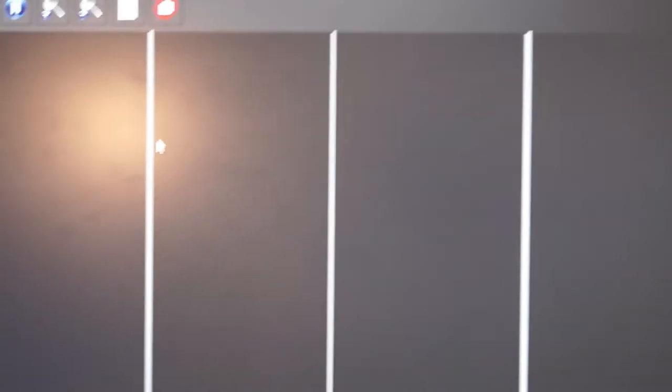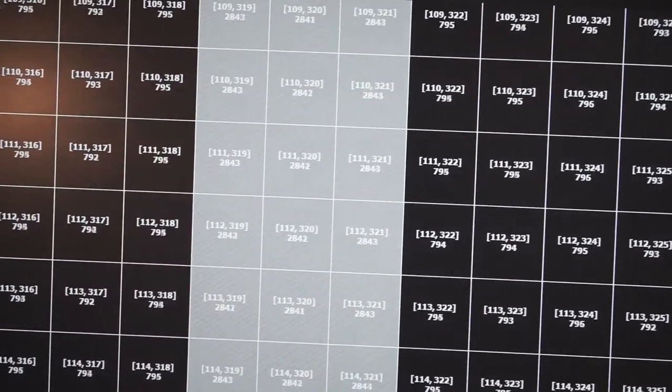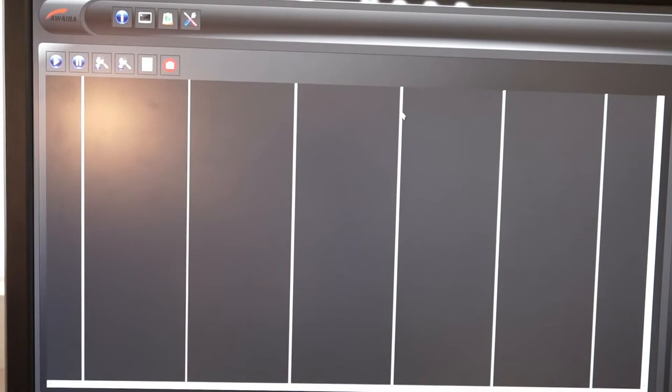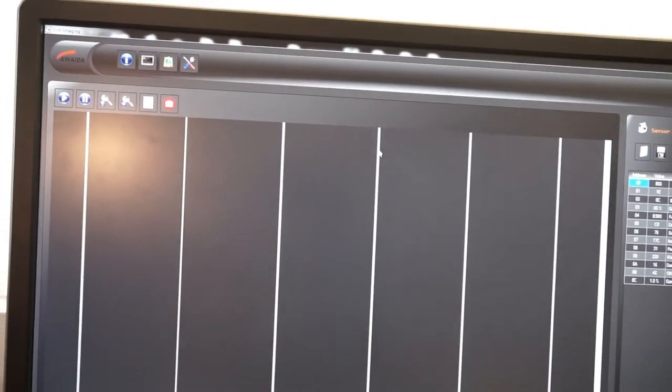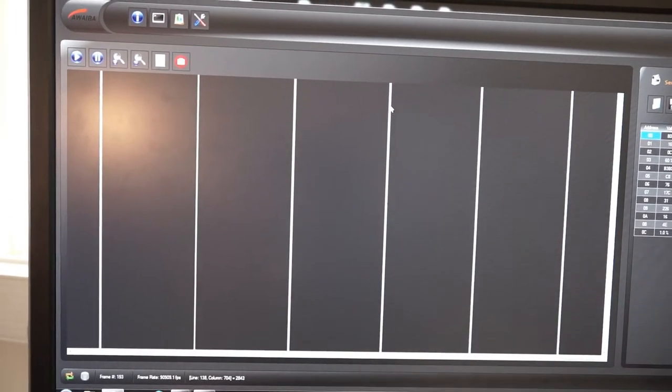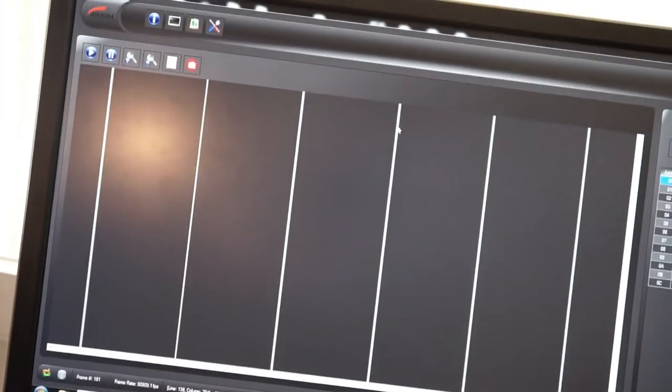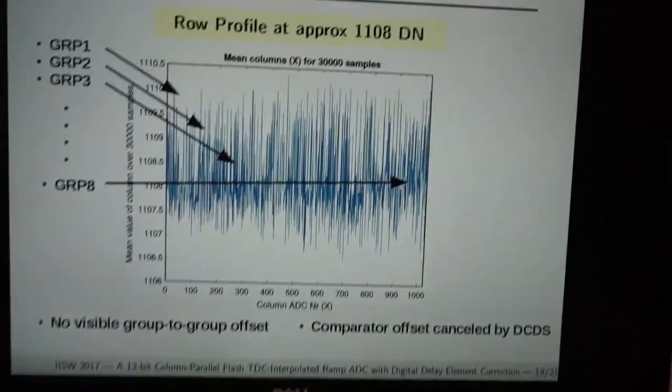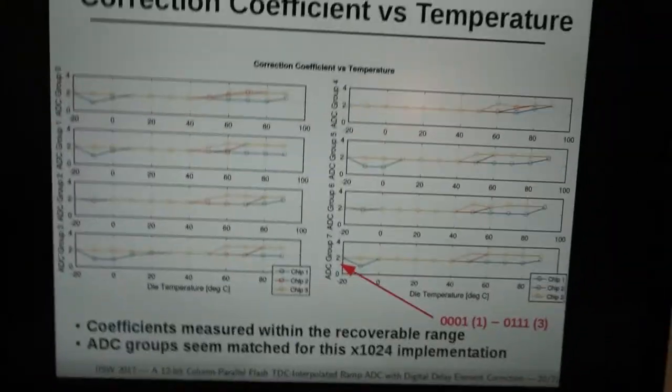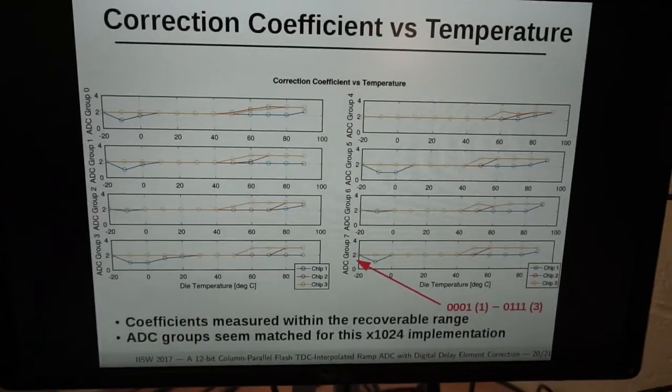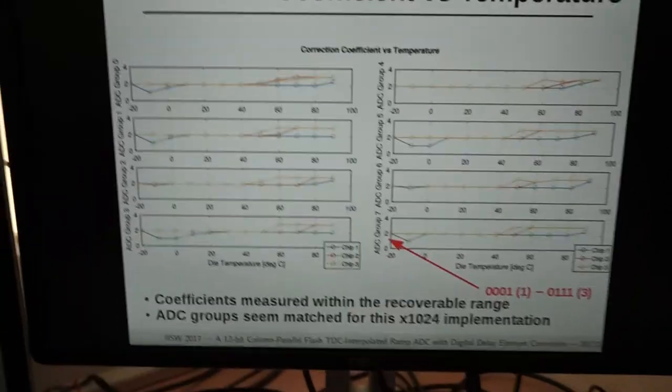You can notice that the neighboring group doesn't do that, and of course this is due to matching. However, this was expected. You see this column is also flickering a bit from time to time - some flickers. This is caused by matching between the columns. However, the matching of the correction coefficients between the individual ADC groups spans between plus minus one overlap or one number, which is within the recoverable range. I'll go back to the slides and show you the last slide, which shows the correction coefficient versus temperature plots for each ADC group on the chip.